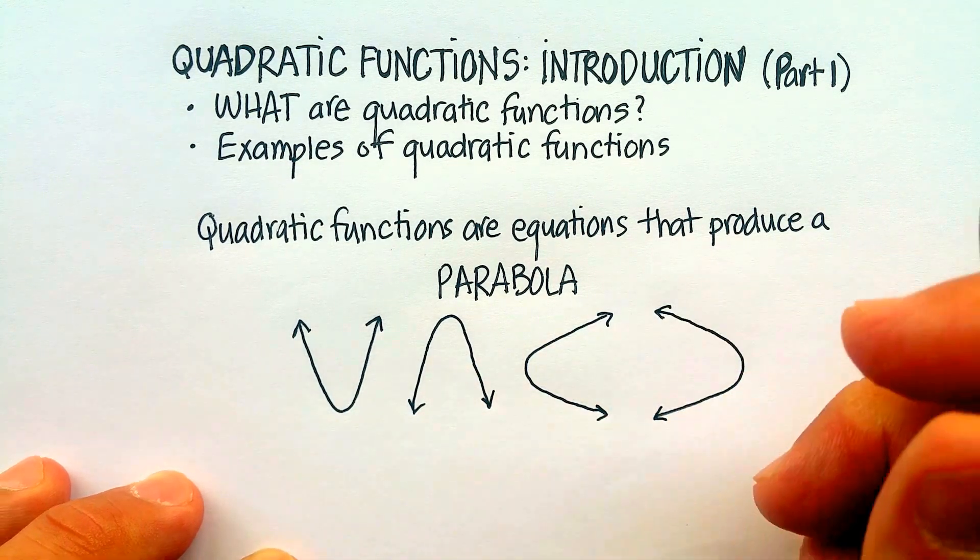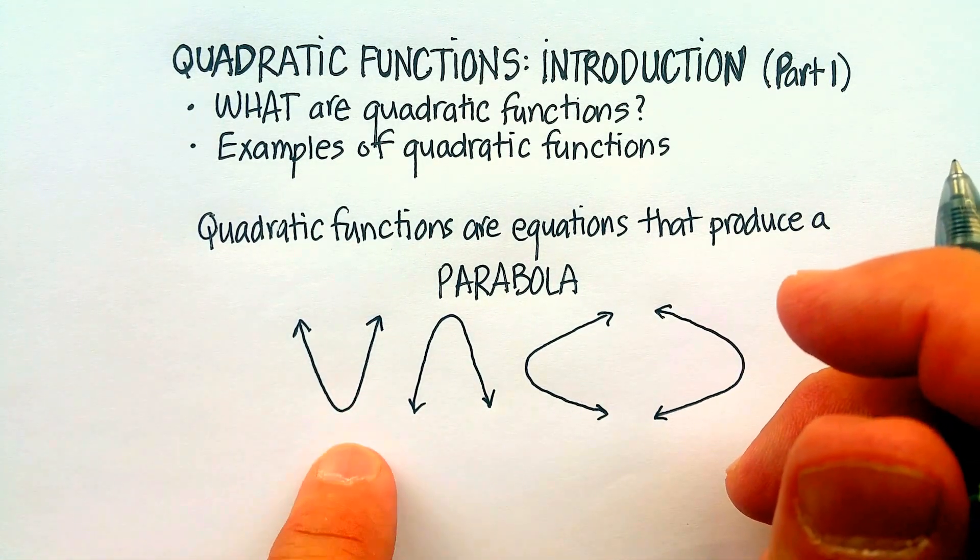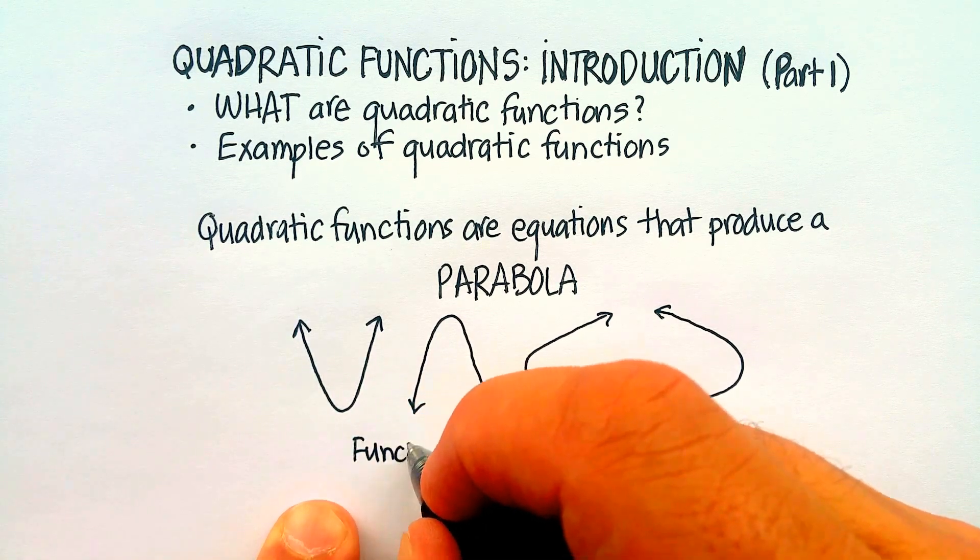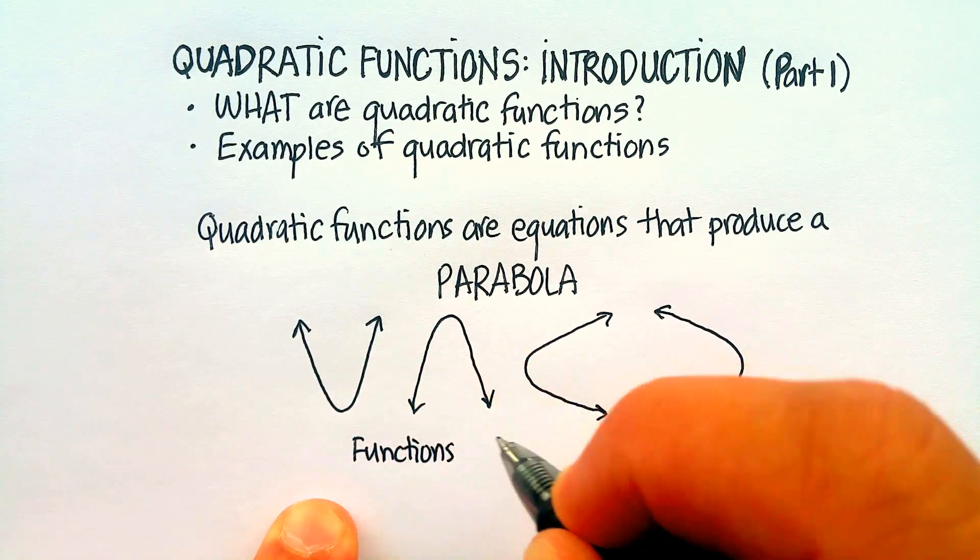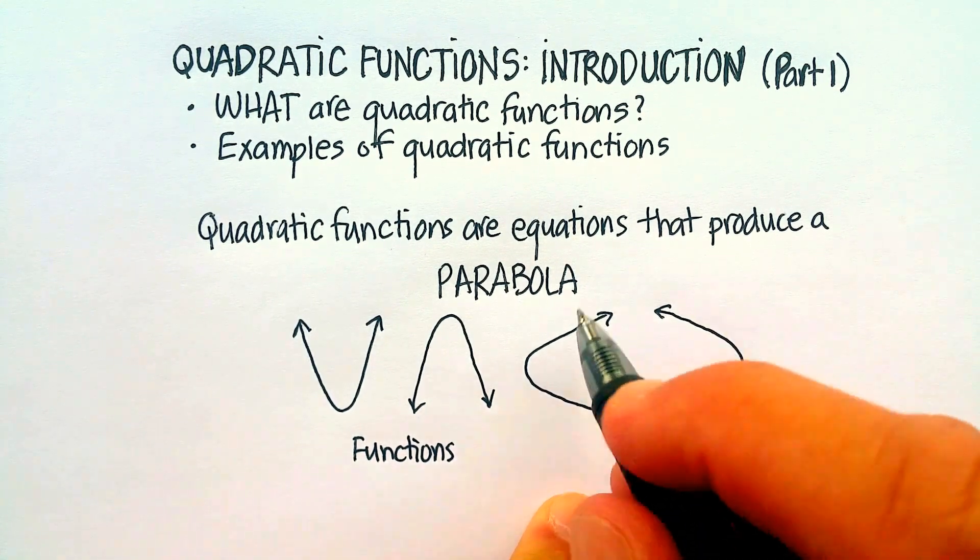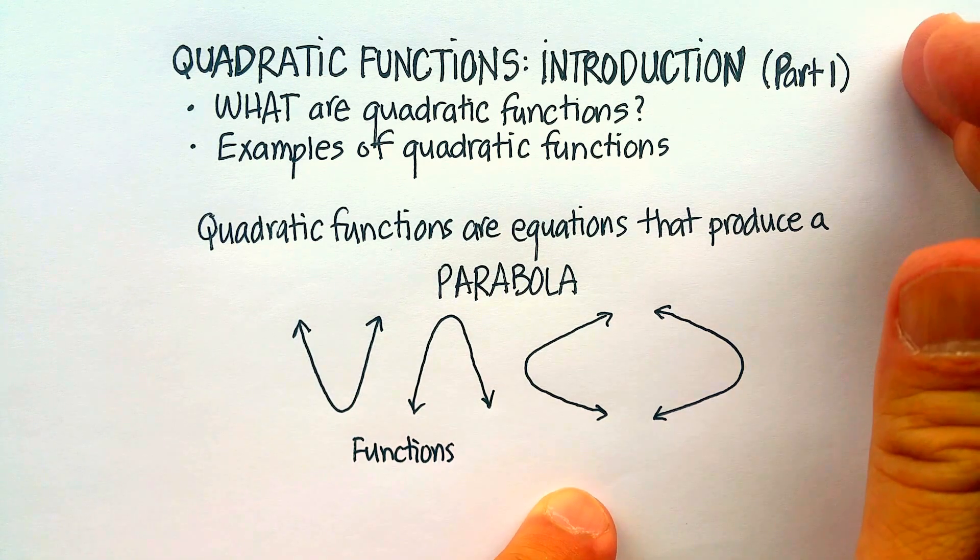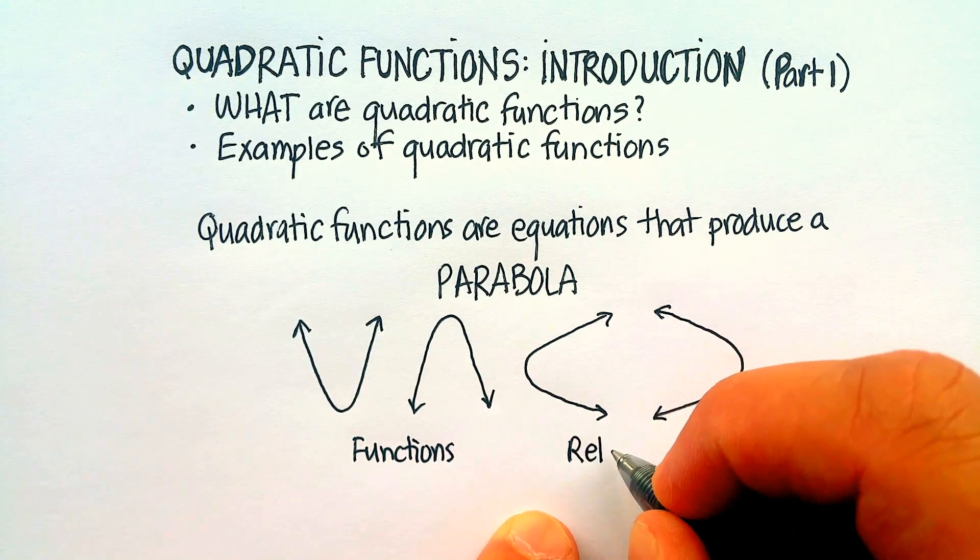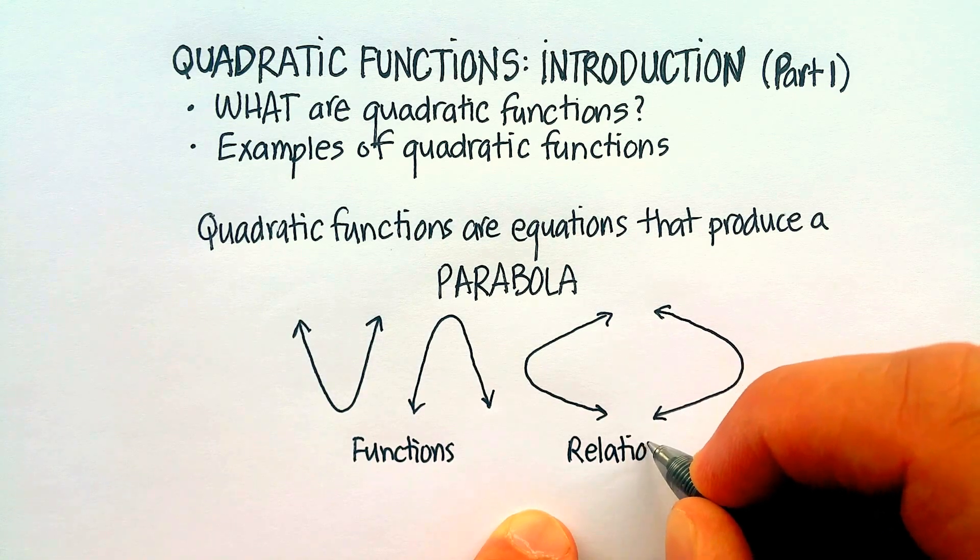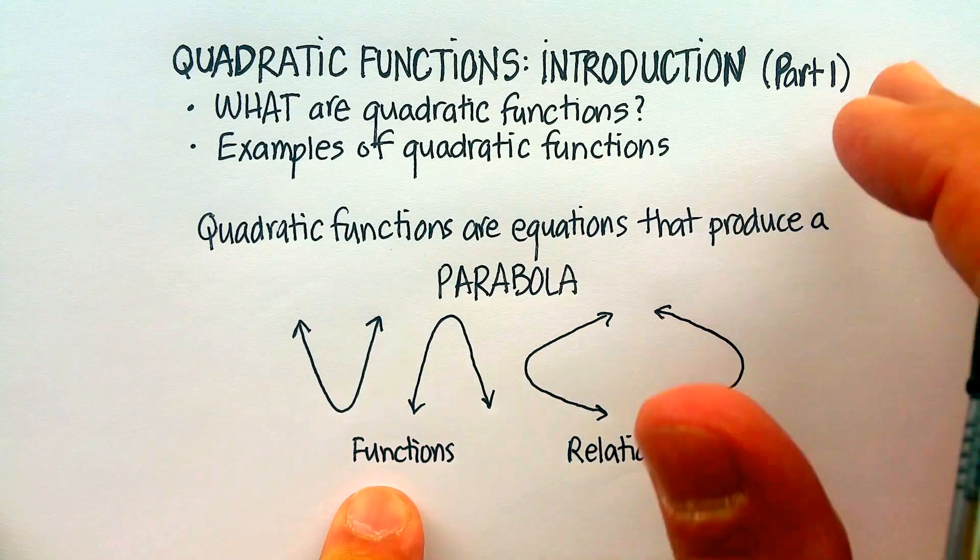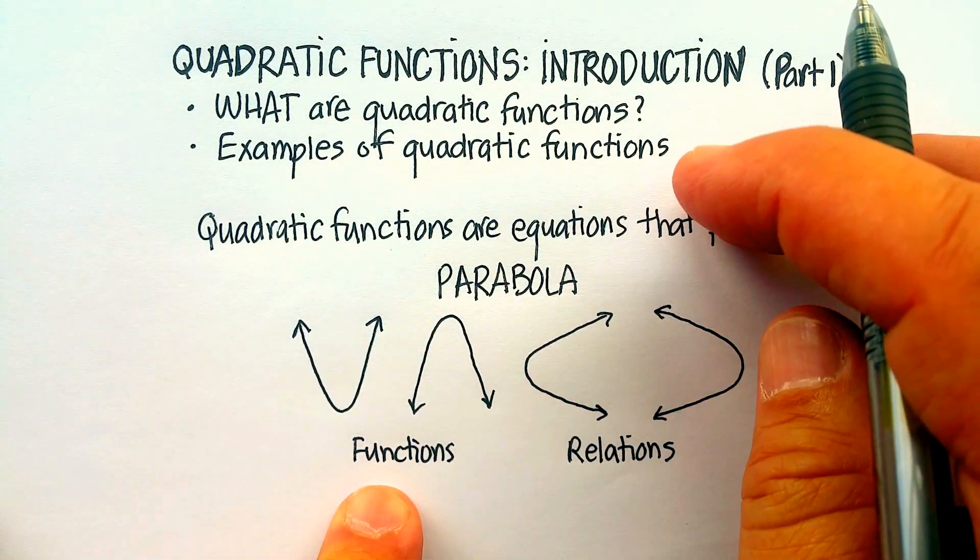Now, some of these parabolas are what we call functions. These two would be functions. And these two are not. These would be called simply what they call relations. And we don't have to get into that right now because there's really so much more to talk about. But we'll just call these relations. And it has to do with what the definition of a function is. But let's just talk about parabolas. So they look something like this.